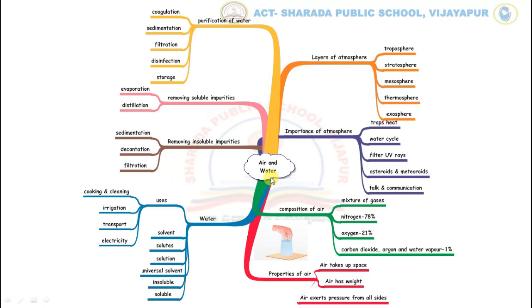Water is one of our planet's needs. Plants, animals and human beings cannot survive without water. Let us see the first branch, which is about the layers of atmosphere.